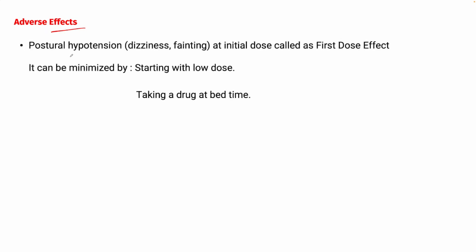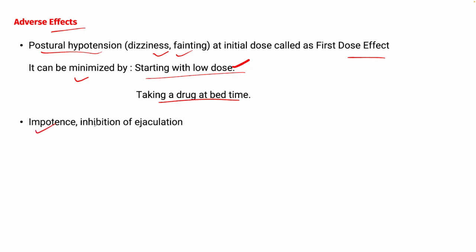Adverse effects of prazosin: first is postural hypotension — low blood pressure that occurs when standing up from sitting or lying down — causing dizziness and fainting, especially at the initial dose. This is known as the 'first-dose effect.' It can be minimized by starting with a low dose and taking the drug at bedtime. Other effects include impotence and inhibition of ejaculation, and sodium and water retention.